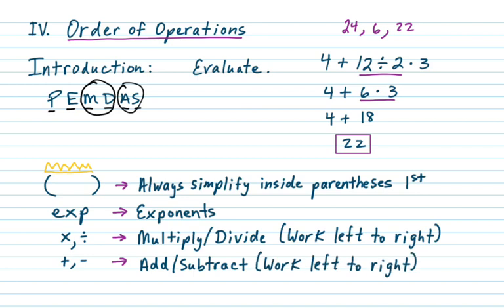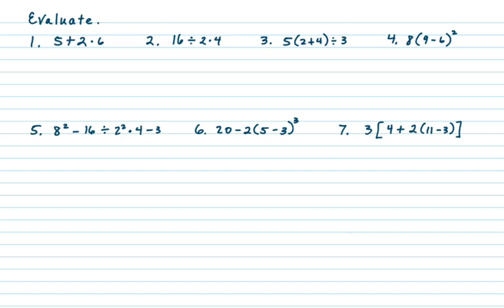Let's go ahead and practice — I've given you seven problems. You may want to do them all now and then watch the video, or watch me do a few and then try the rest. On number one, the first thing you should do is the multiplication: 5 plus 2 times 6 — two times six is 12, so we get 5 plus 12, which is 17.